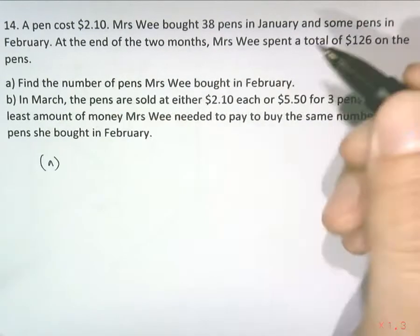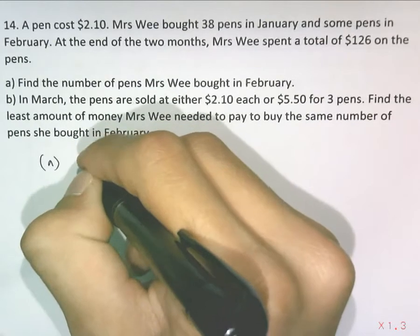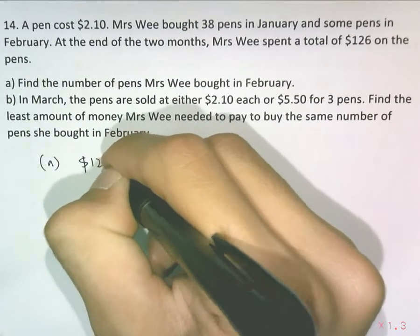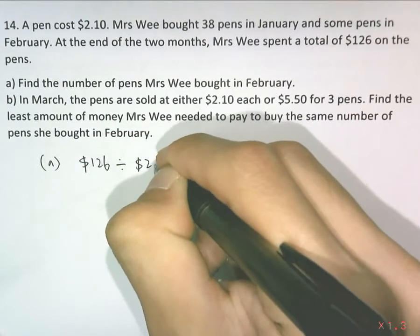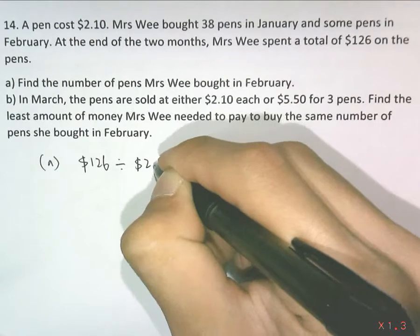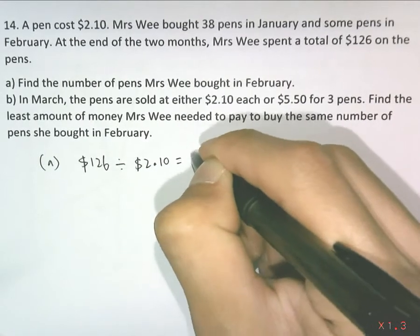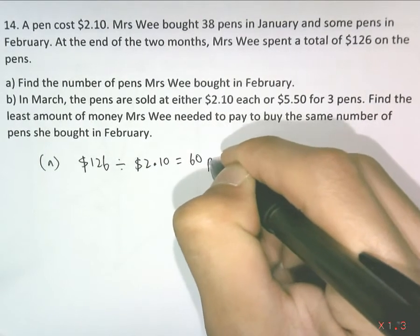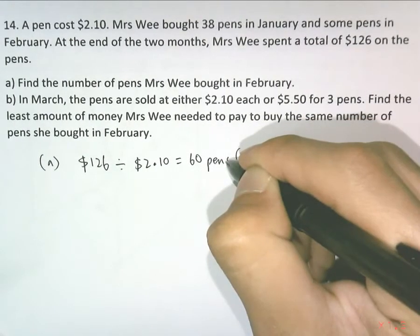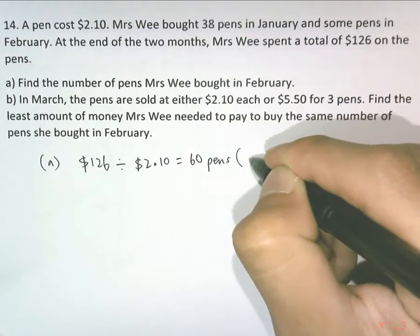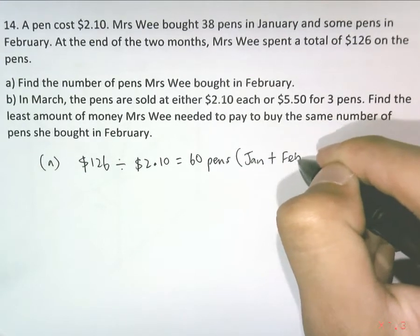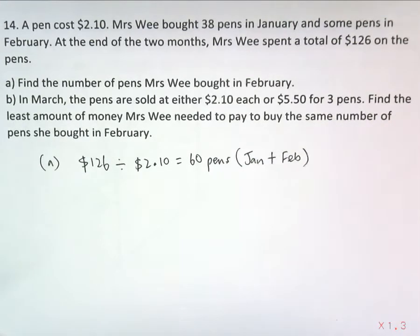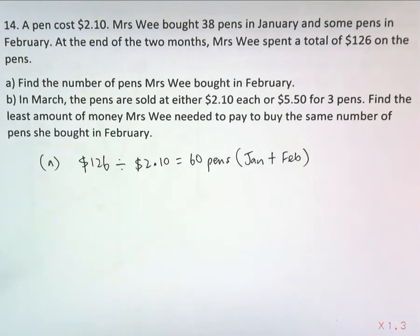Given the total cost of all the pens — $126 — we can divide by the unit price, $2.10, and we'll find that there will be 60 pens for both January and February combined. So the number of pens Mrs. Wee bought in the two months is 60.